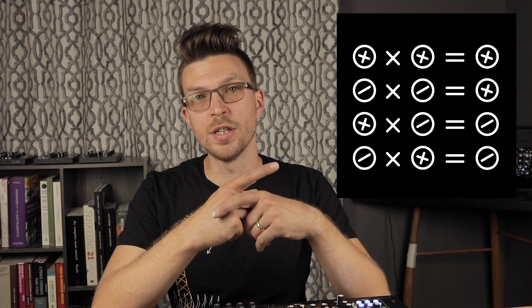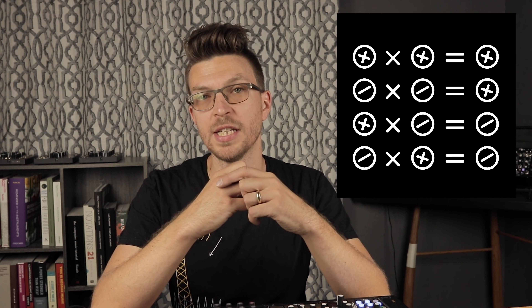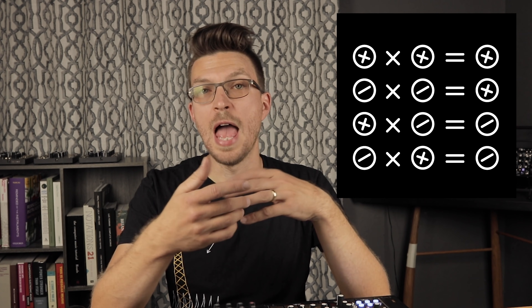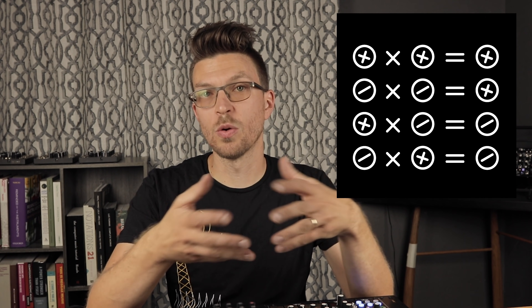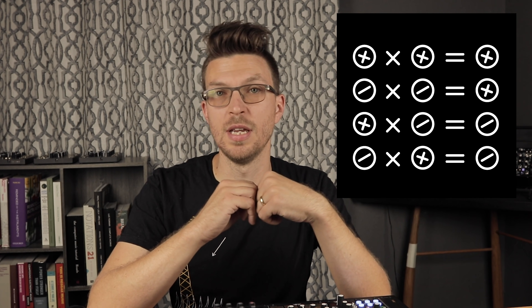It's a bipolar VCA which can attenuate and invert via voltage control at the modulator input. If we look at how numbers of different signs work when multiplied together, we can see that when two positive or two negative numbers are multiplied together, the result is always positive. And when one is positive and the other is negative, the result is always negative. In other words, when they're both the same, it's positive, and when they're different, it's negative.